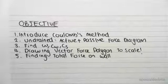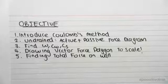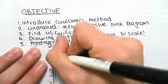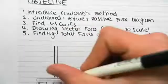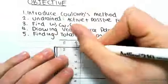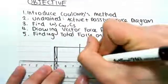So first of all, Coulomb's method. In the previous video we saw Rankine's method for retaining wall. So we had a wall, and we converted vertical forces to horizontal stresses.